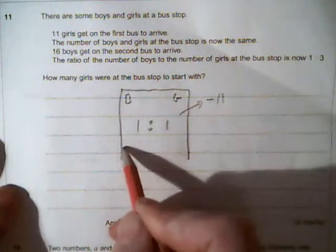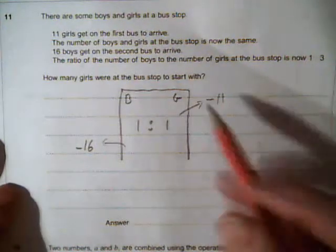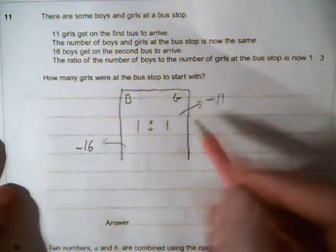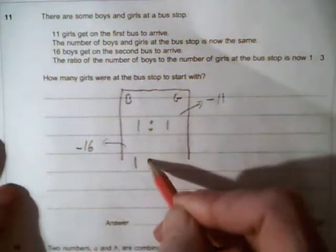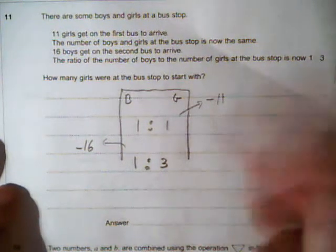Then a second bus comes along and 16 boys get on, so we lose 16 boys. The ratio of the number of boys to the number of girls at the bus stop is now 1 to 3. How many girls were at the bus stop to start with? So we need to work it backwards.